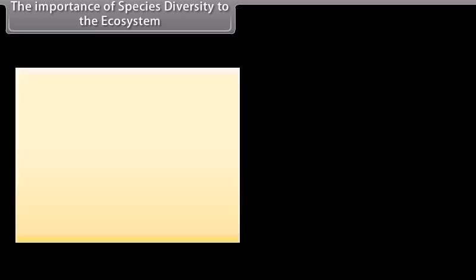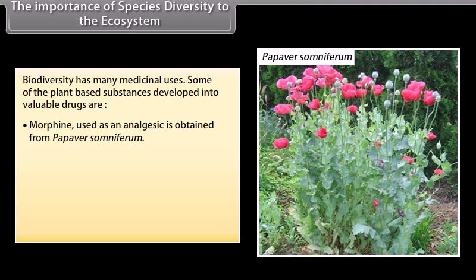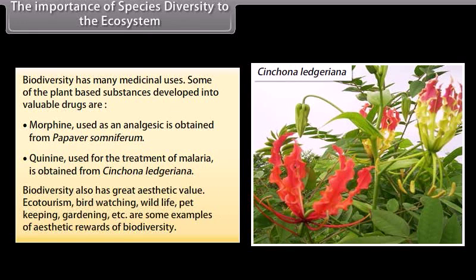Biodiversity has many medicinal uses. Some plant-based substances developed into valuable drugs are: Morphine, used as an analgesic, obtained from Papaver somniferum; and Quinine, used for the treatment of malaria, obtained from Cinchona ledgeriana. Biodiversity also has great aesthetic value. Ecotourism, bird watching, wildlife, pet keeping, and gardening are some examples of the aesthetic rewards of biodiversity.